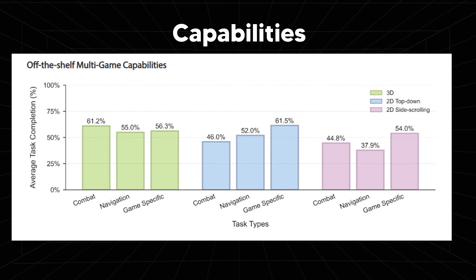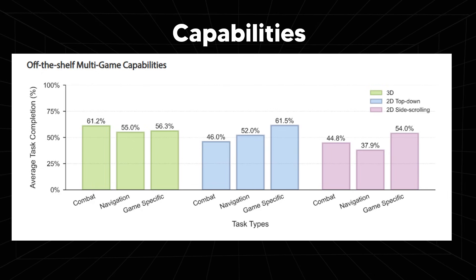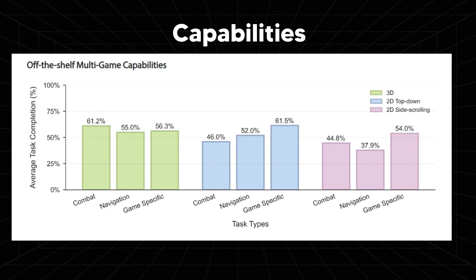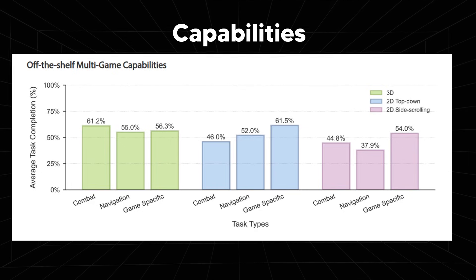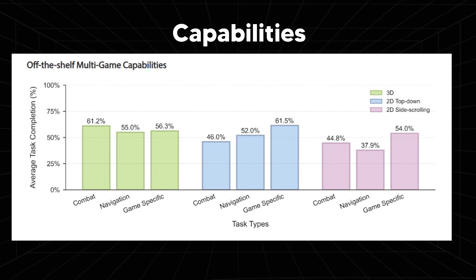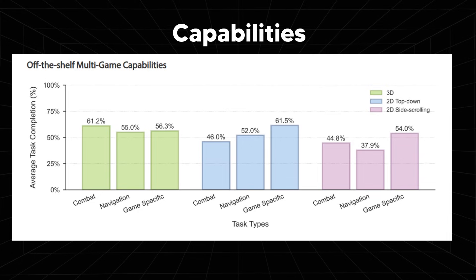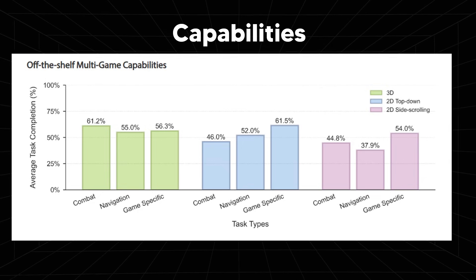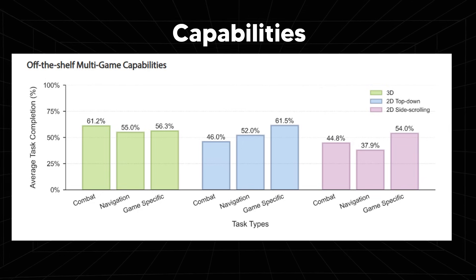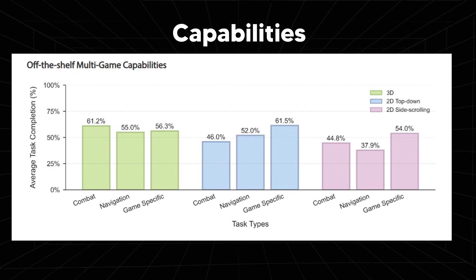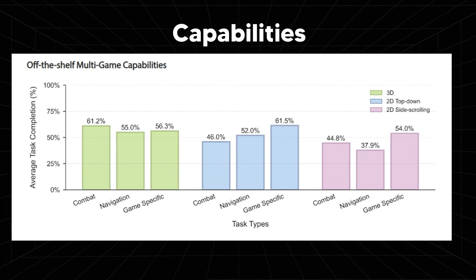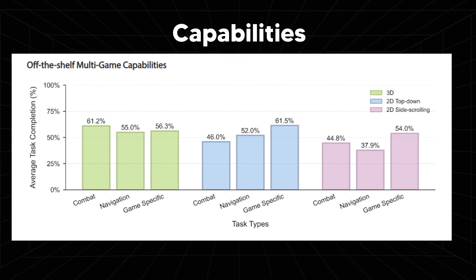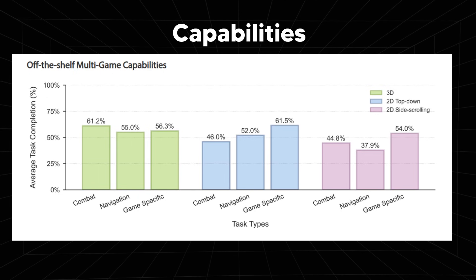This slide is the proof of generalization that everybody wants to see. It shows that Nitrogen is not just a single-game agent — it has learned transferable skills and not scripts. Internet-scale imitation actually works. In other words, we trained it once and it can already play many games decently. That's the same moment LLMs had when zero-shot prompting first worked. Without any fine-tuning, it can have general gaming skills rather than memorizing one title.